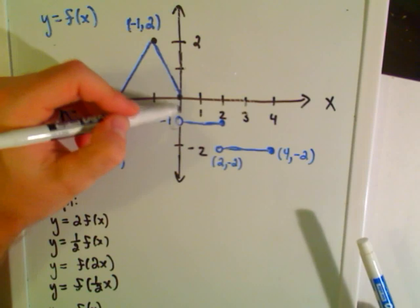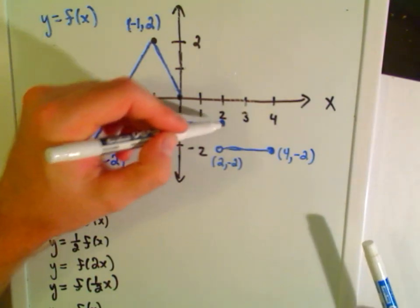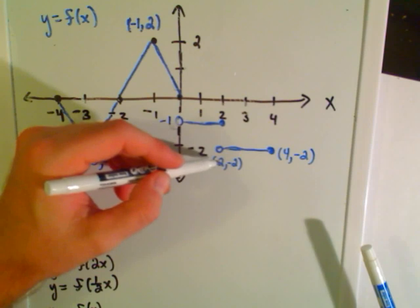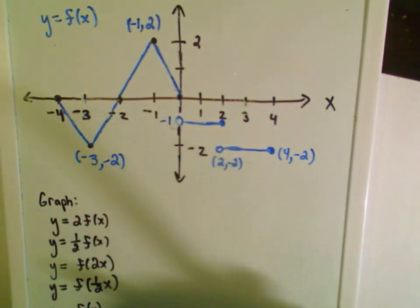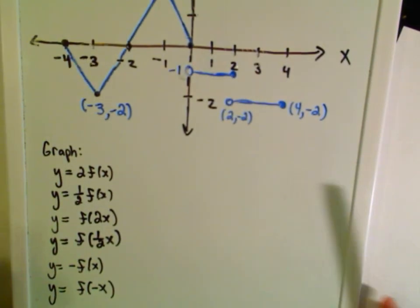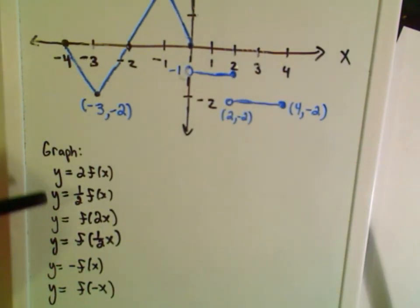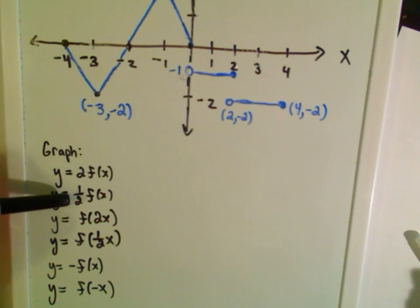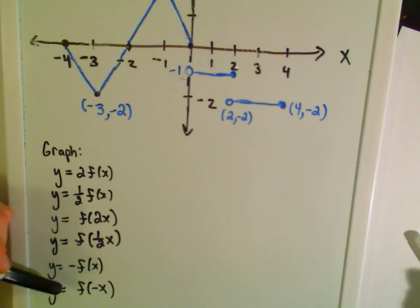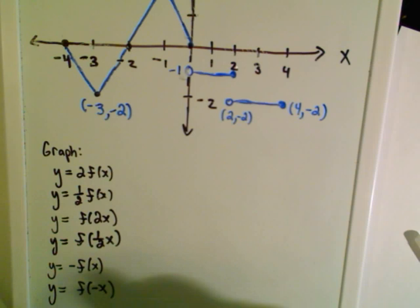Then it's a flat line extending over to two, and then it jumps down, starting at (2, -2) as a flat line from two to four. I'm going to graph all six of these functions: 2·f(x), ½·f(x), f(2x), f(½x), -f(x), and f(-x).